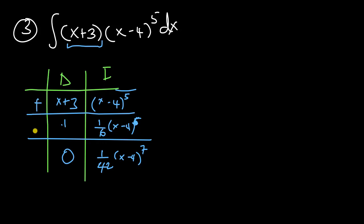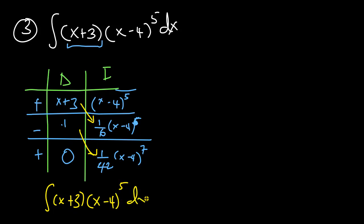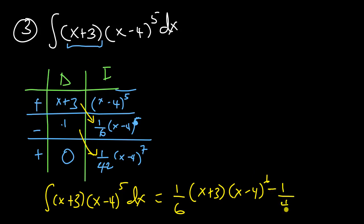We put signs: plus, minus, plus. Multiplying adjacent functions, the integral of (x+3)(x-4)⁵ dx equals (x+3)·(1/6)(x-4)⁶, minus 1·(1/42)(x-4)⁷, giving us (x+3)/6·(x-4)⁶ minus (1/42)(x-4)⁷, plus a constant of integration. That's our solution for this example.